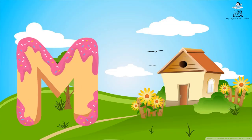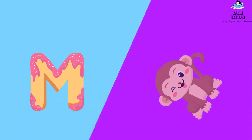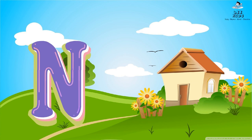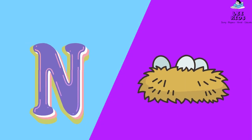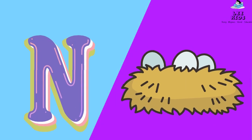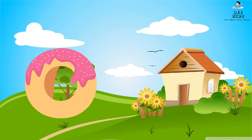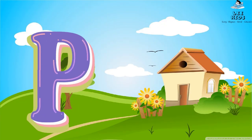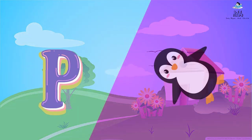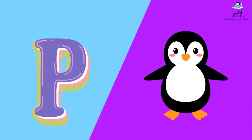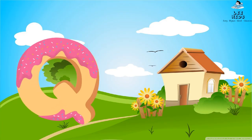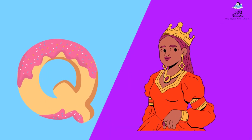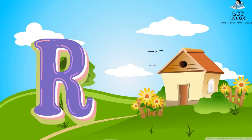M for monkey, N for nest, O for orange, P for penguin, Q for queen, R for rabbit.